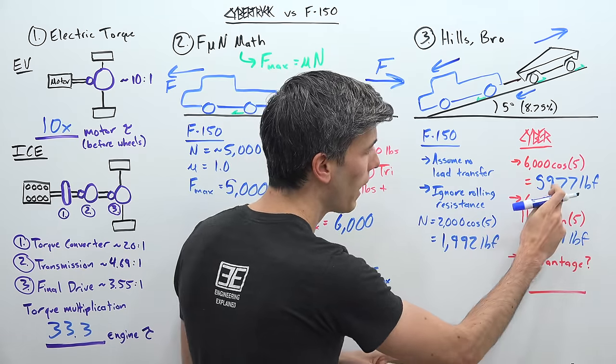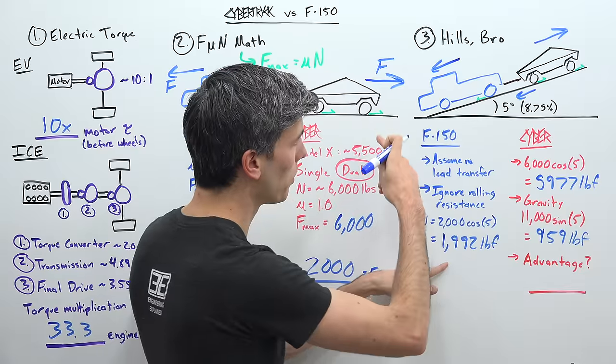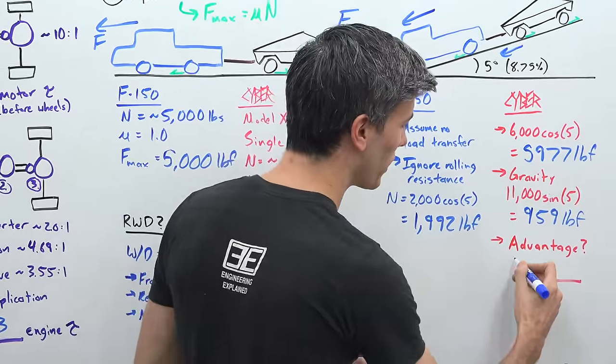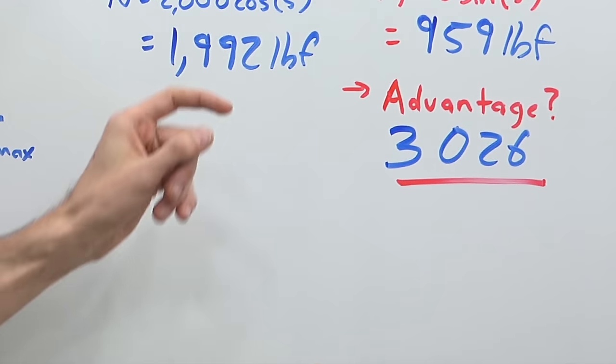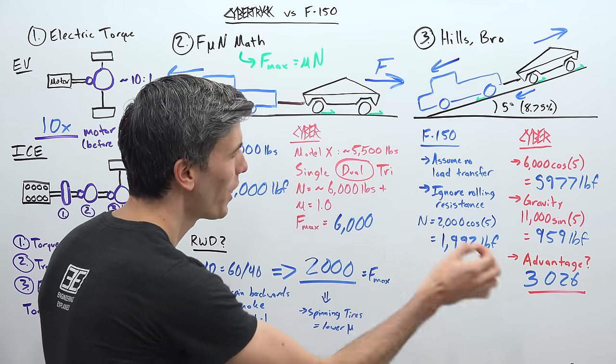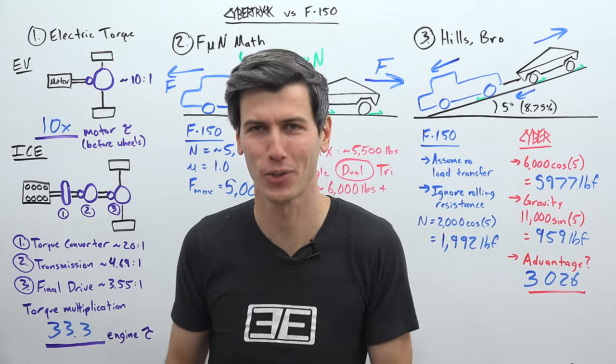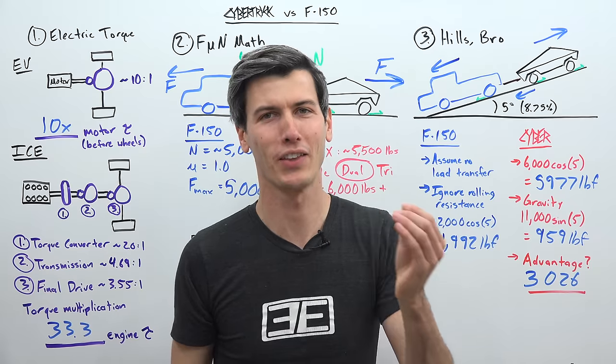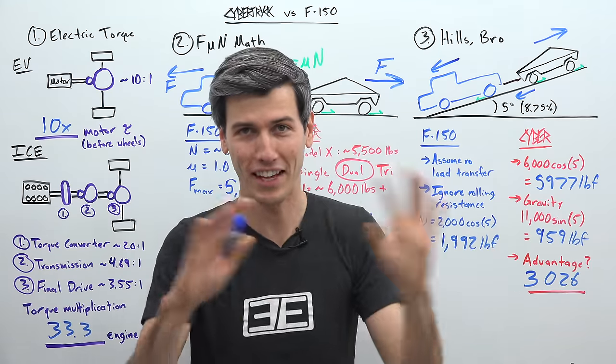And so we're going to take 5,977, subtract what the truck is pulling against it, and then subtract what gravity is pulling against it. And so that is going to give the Tesla an advantage of 3,026 pounds. So what this number proves is that it was very easy for the Tesla to pull the truck uphill, simply because it has more weight on the driven wheels. So the only thing we learned from this video is that the Tesla truck is heavy. That is all that we learned. Tesla's truck is heavy. That's it.